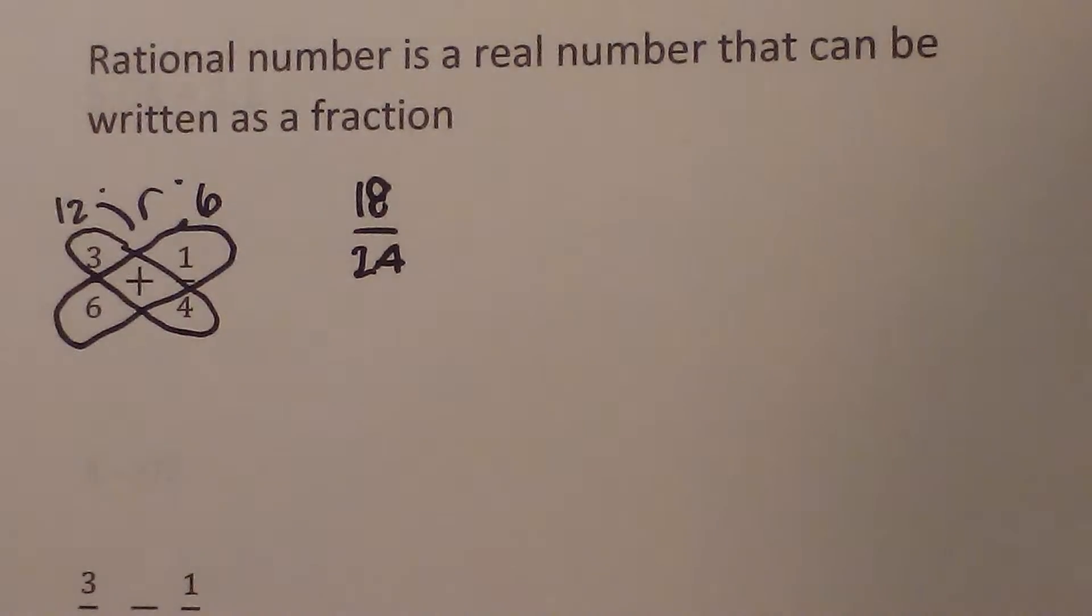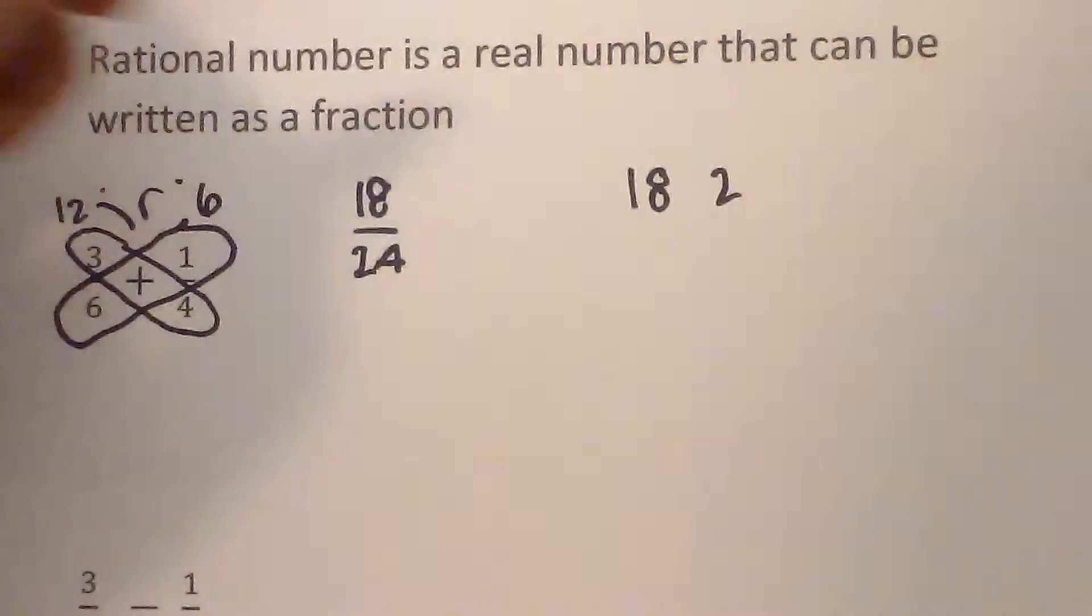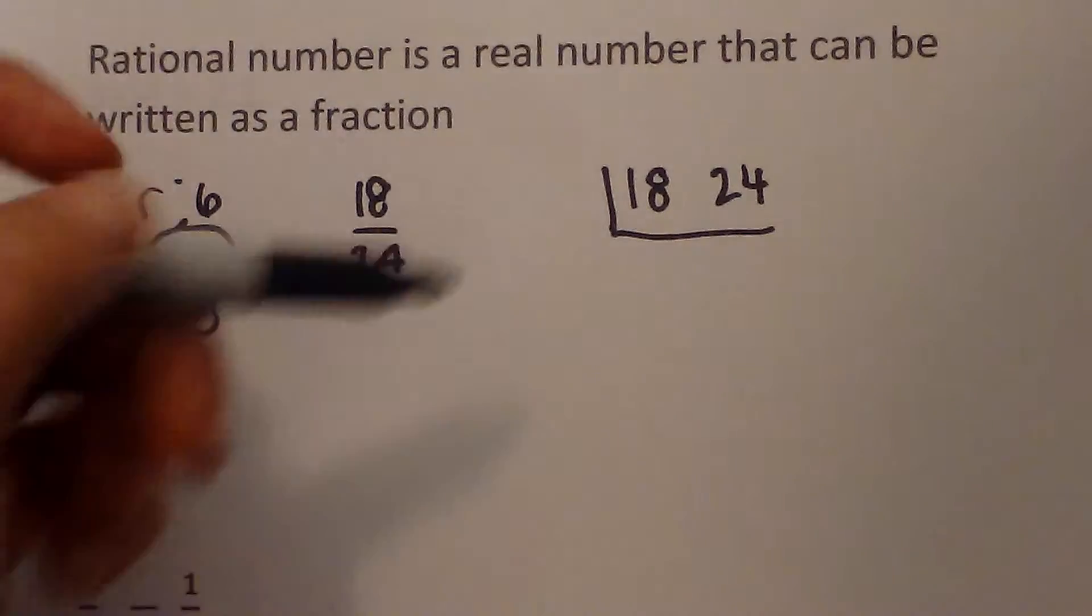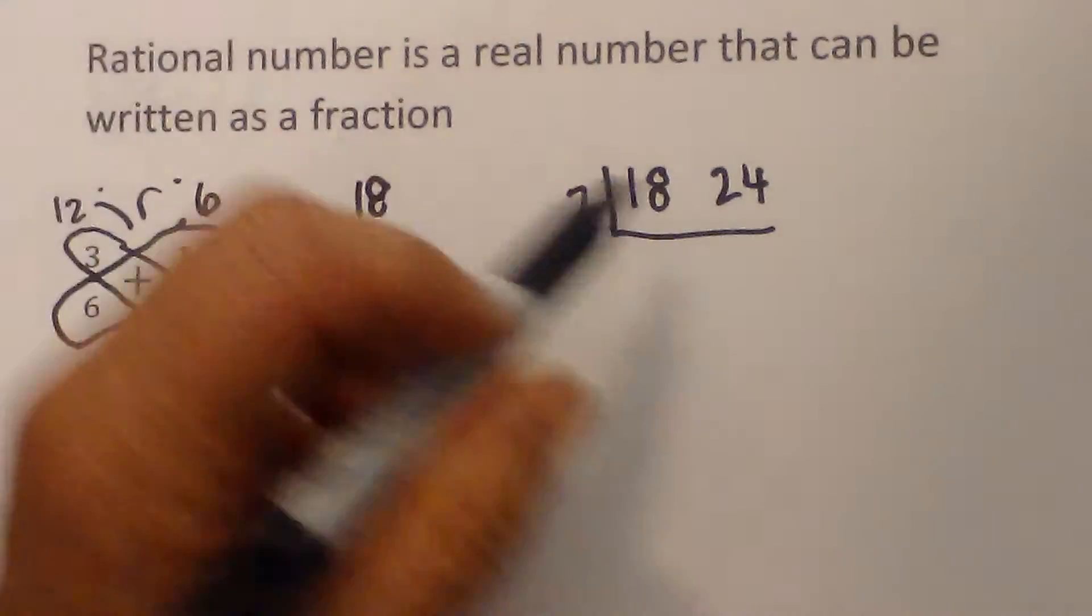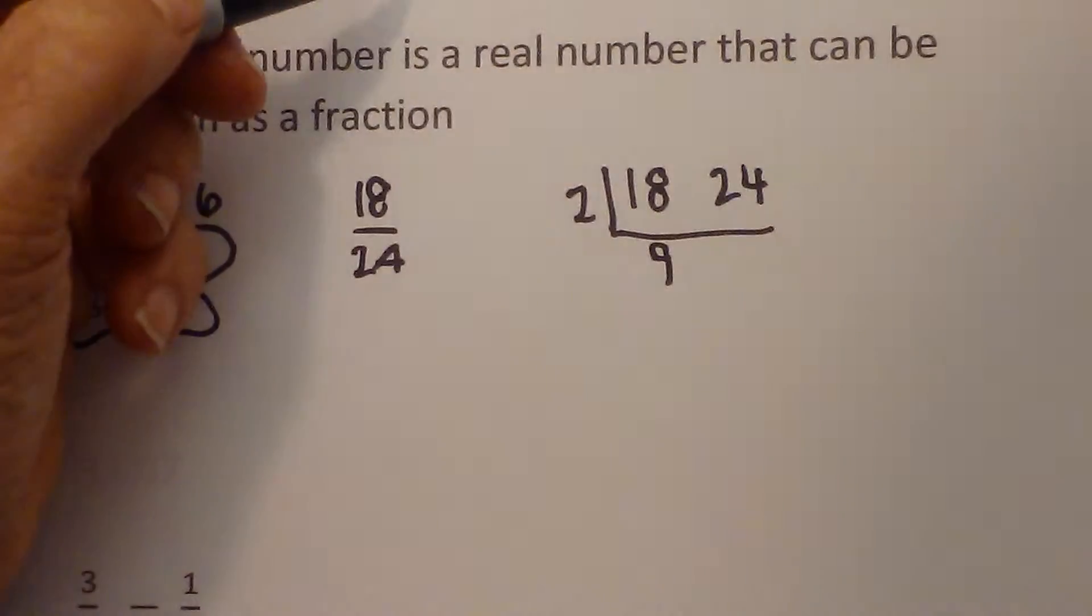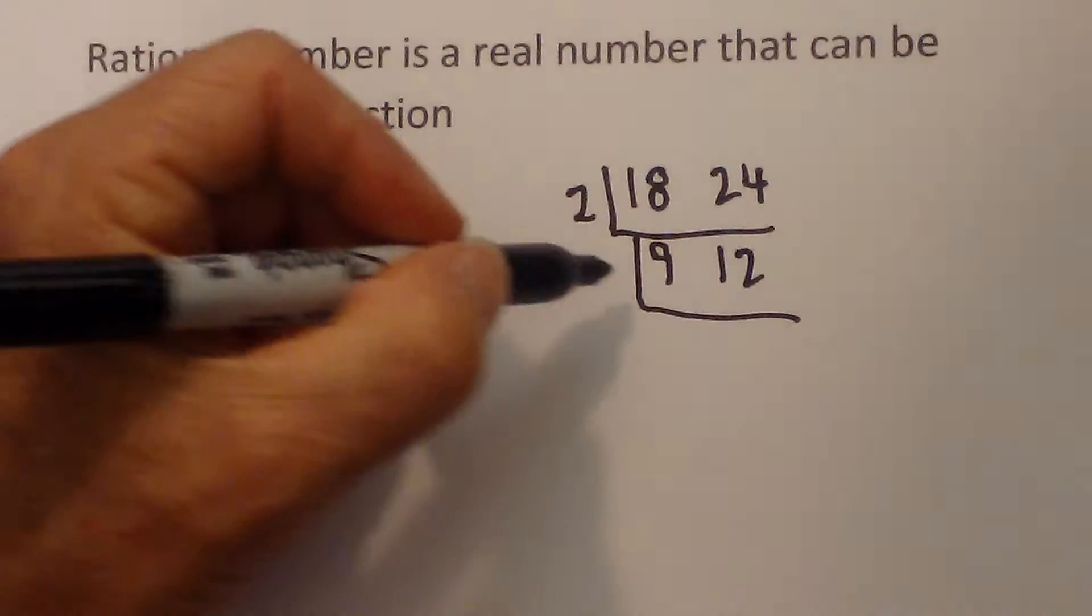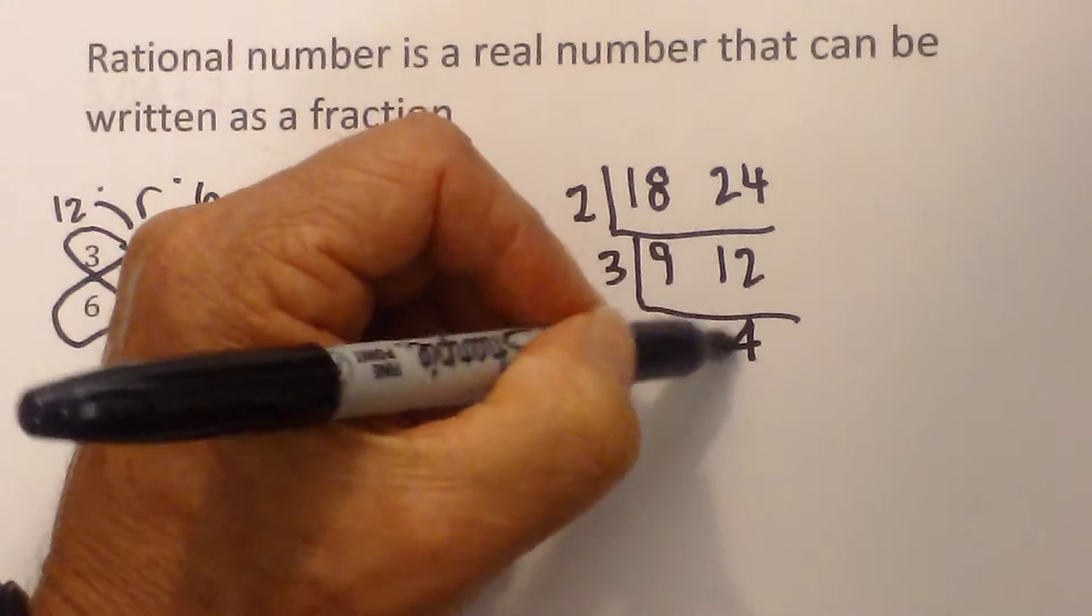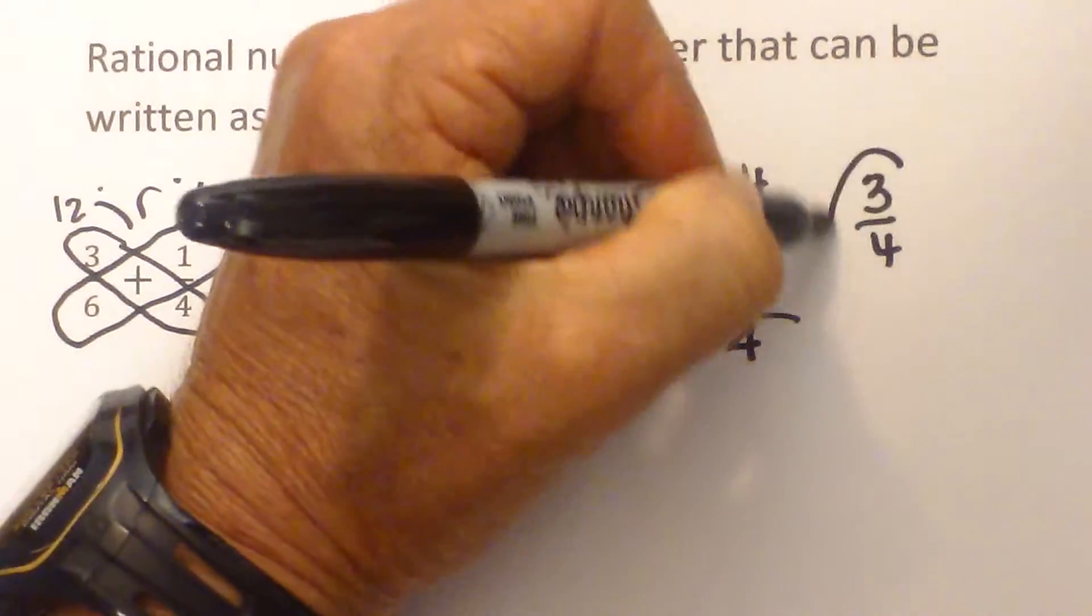Then 6 times 4, you multiply the bottom numbers so that is 24. Now the second shortcut that you may not be aware of is that you need to simplify this fraction. One of the ways you can simplify the fraction is just write the two numbers next to each other and draw a line underneath and then you find a number that will multiply into both of them. In this particular example, I know that 2 will go into both of them because they end in even numbers. So 2 goes into 18 nine times and 2 goes into 24 twelve times. I then draw a line underneath and I know that 3 goes into both of these. 3 goes into 9 three times and goes into 12 four times. I am now down to prime, and so I just rewrite this as 3 fourths.